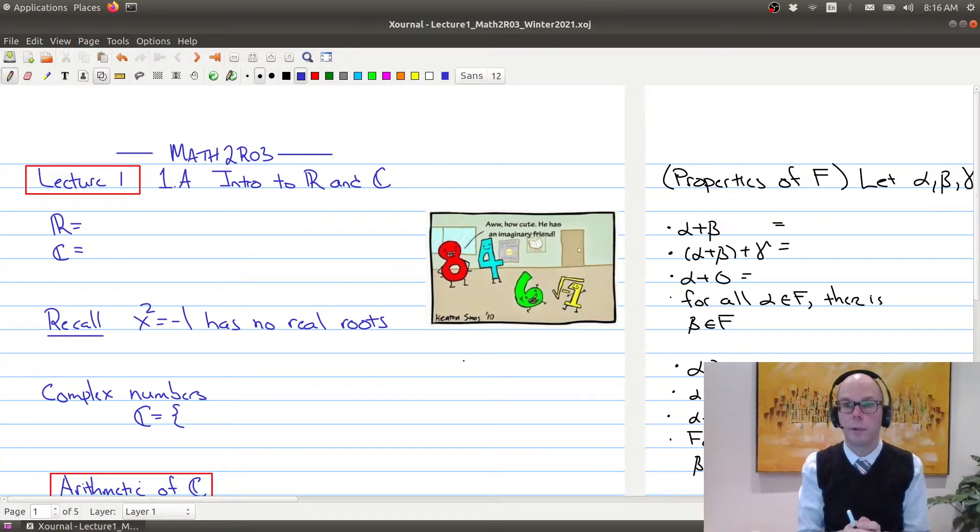Lecture 1 is our first lecture where we get into the mathematical content of the course. Today's lecture is based upon section 1.8 of the textbook, where we review some of the properties of the real numbers and the complex numbers. Many of these things you probably have seen already in Math 1B03 or maybe one of your other courses.